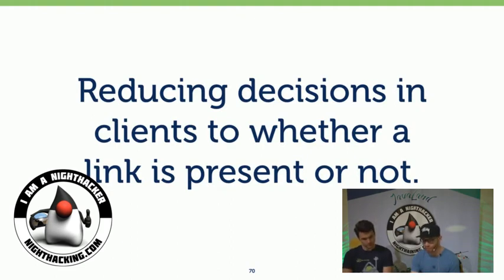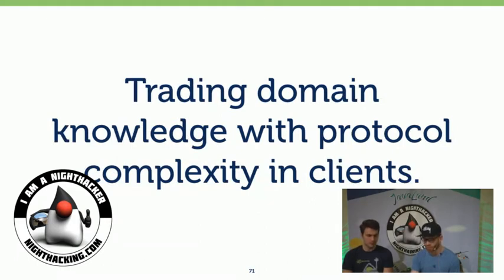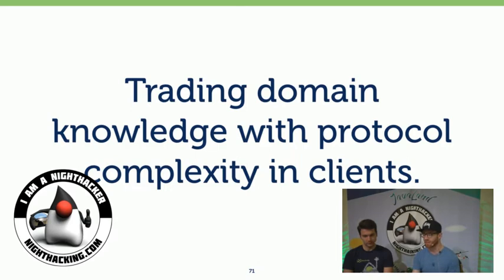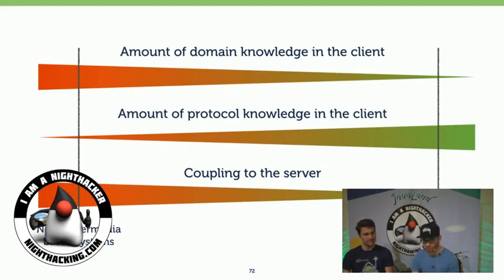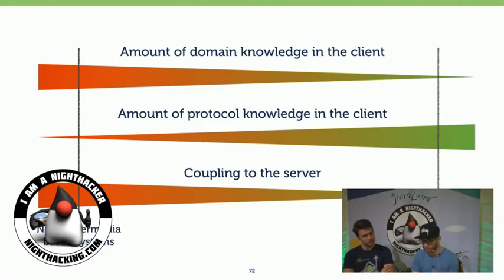We're trading two kinds of complexity here — we're simplifying the client because we don't have to teach it what 'payment expected' actually means. We only tell it: if a link is present, you can do something; if not, you can't. We're trading domain complexity for protocol complexity, meaning the client now needs to know about links and link relations, but it doesn't need to know the details of what actually makes an order cancellable.